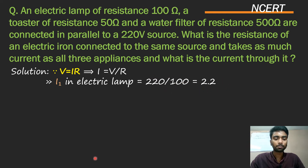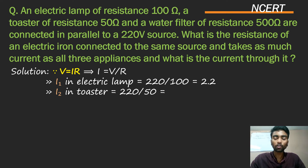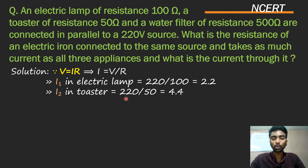Ab i2 nikalte hain — i2 toaster ke liye hai. Toaster ke liye V by R, toh V = 220 aur resistance toaster ki 50 ohm, so 220 divided by 50.